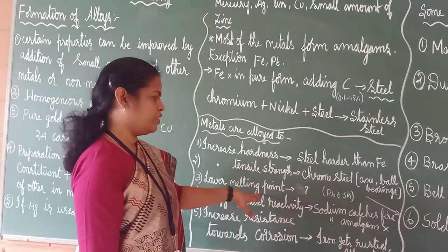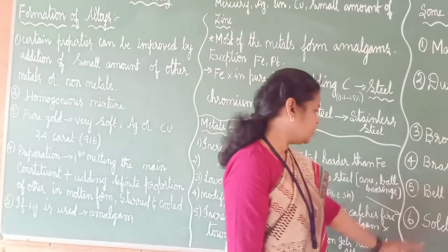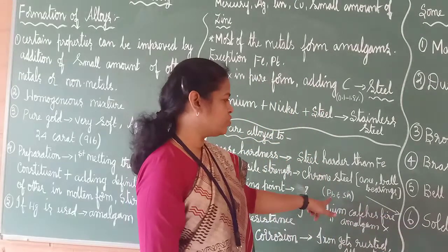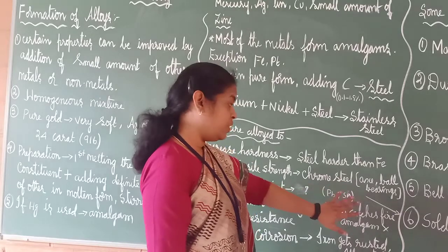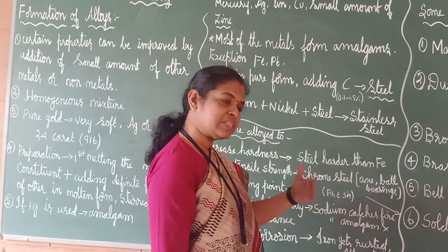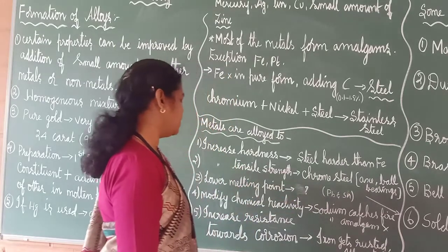It will lower the melting point. How it will lower the melting point? For example, that is solder. The melting point will be lower. We will be using two metals, Pb and Sn. But solder will have the melting point lesser than that of these two. So, that way it is useful.